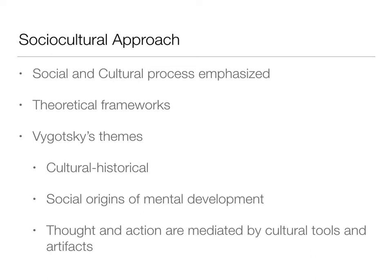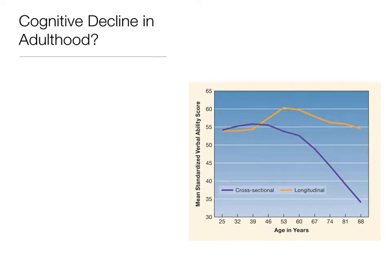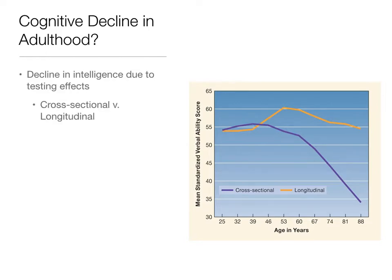Now we're going to switch into adulthood. There has been research suggesting a cognitive decline in adulthood. For a long time we really thought there was a big cognitive decline because we were doing cross-sectional research — taking groups of 25, 32, 39, 46, 53, all the way up to 88-year-olds and measuring them at one point in time. What we found was a big difference: verbal ability scores for 25 to 53-year-olds were similar, but after the sixties there was a dramatic drop, and by 88 scores were much lower.